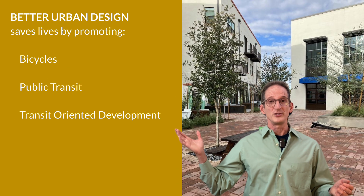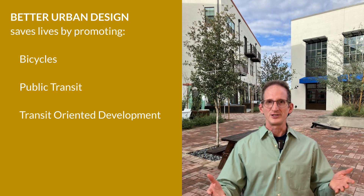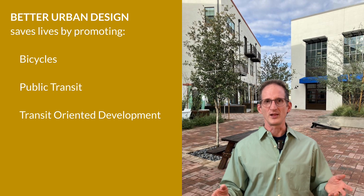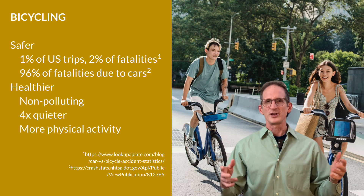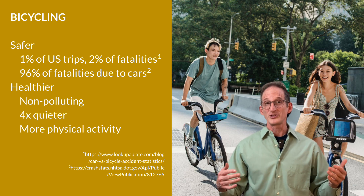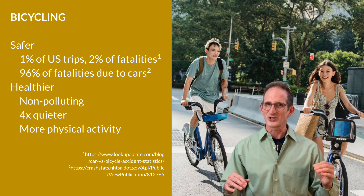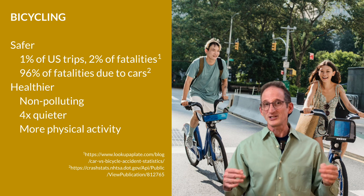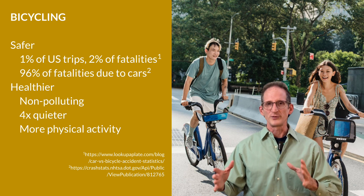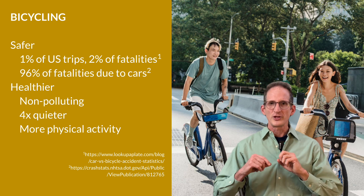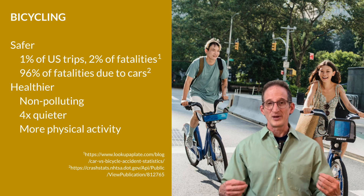With better urban design, we have three opportunities to save lives: by increasing bicycle infrastructure, public transit, and through transit-oriented development. Bicycling is much safer than driving. In the US, 1% of all road trips is by bicycle but 2% of all fatalities is by bicycle. However, 96% of bicycle fatalities are due to cars. If we can protect bicycles from cars through dedicated infrastructure, virtually all of the fatalities go away and bicycles end up being much, much safer.